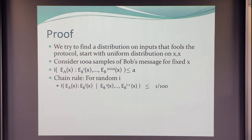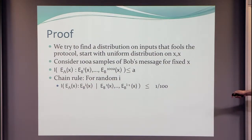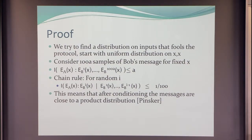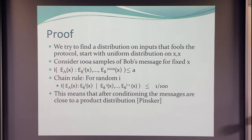Now we apply this idea of killing correlation by conditioning. By the chain rule, for some random i, the information between Alice's encoding of x and that particular sample — which is distributed exactly the same way as before — conditioned on the previous i-1 samples, is at most 1/100. What this means is that after conditioning, or changing the distribution so that it is conditioned on some value of these previous messages, we have that in the new distribution, the information between the two encodings is small — 1/100.